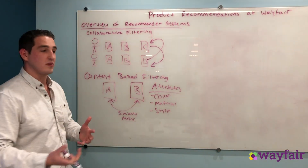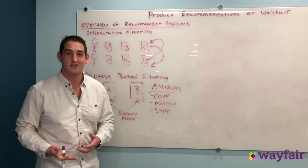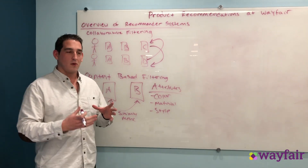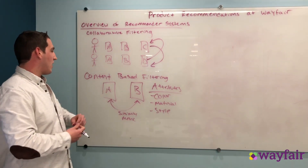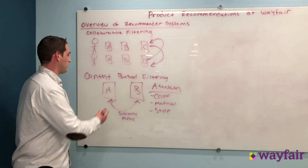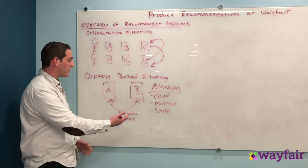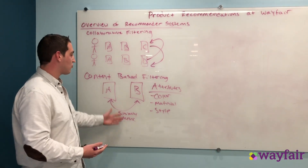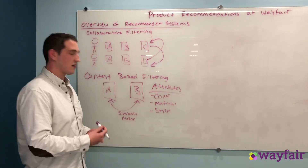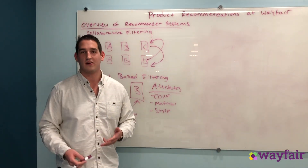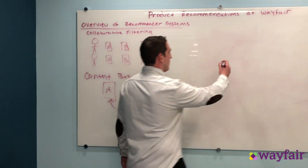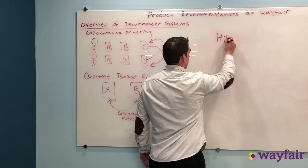Another way that we can generate recommendations is through content-based filtering. In this way we're not looking at customer behavior but we're actually looking at the actual content of the products themselves to generate these recommendations. So we have two products and we can create some similarity metric between them based off of the attributes about these products themselves, like the color, the material, the style of these products to generate recommendations.